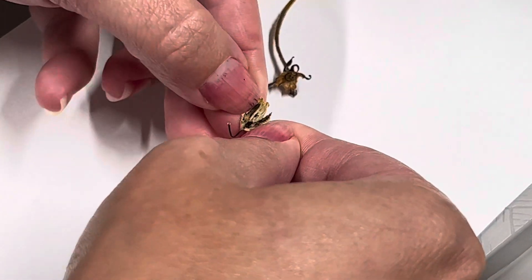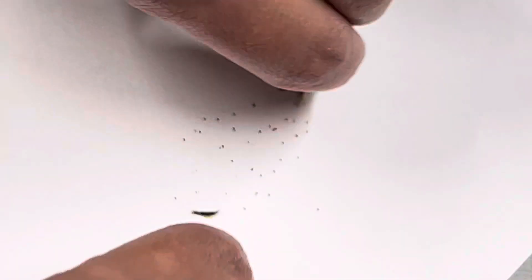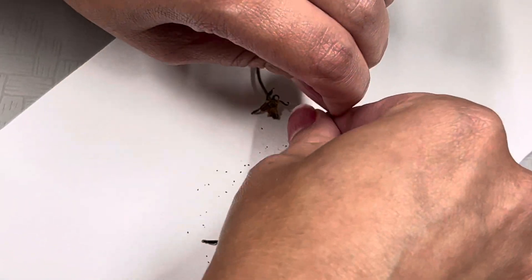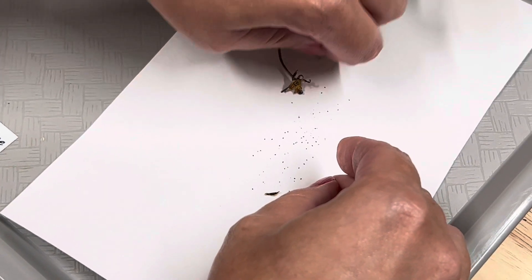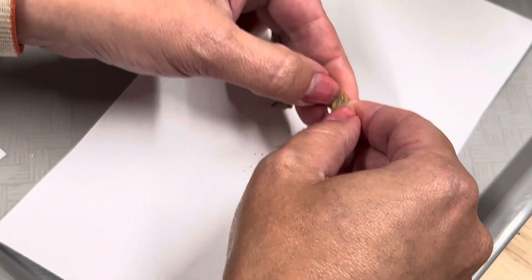All these little specks in there are seeds. They just look like tiny little pieces of dust, and those are seeds. I'll try to get them all out.